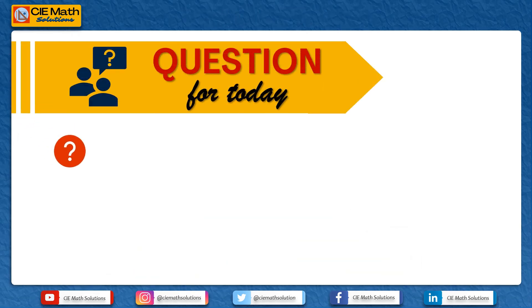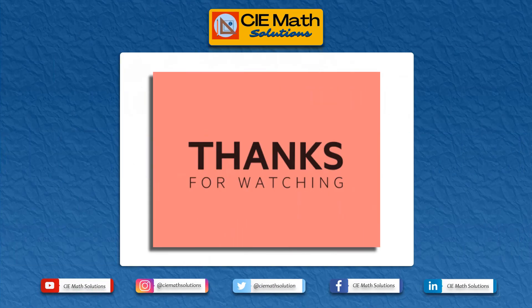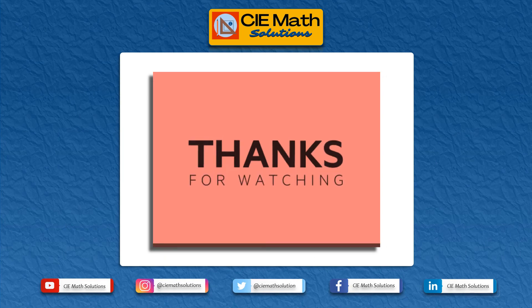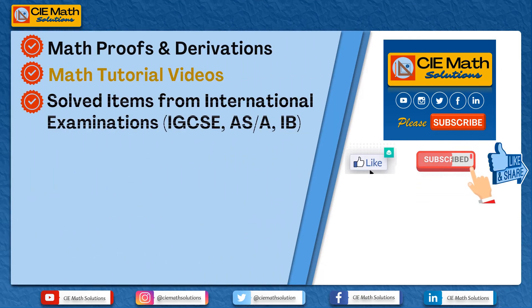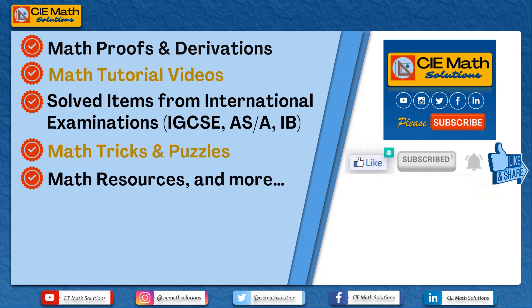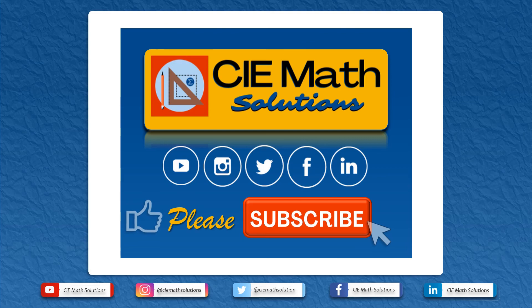The question for today is: is there any other way of proving or deriving the algebraic identity A minus B squared is equal to A squared minus 2AB plus B squared? If you have answers to this question, you may write them down in the comment section below. Thank you for watching this video. For more videos on math proofs and derivations, math tutorial videos, solve items from international exams, math tricks and puzzles, math resources and more, please don't forget to like, subscribe and share. Thank you very much for your continued support.